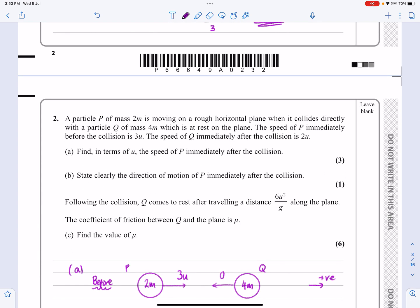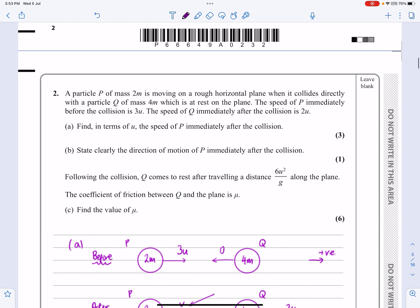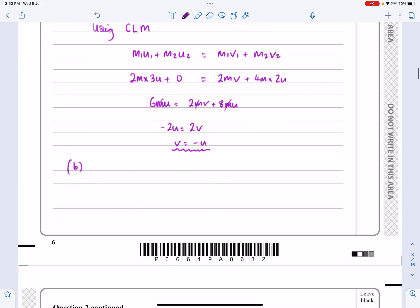Where they say find in terms of u, that's what I've done. State clearly the direction of motion, so I can now say P is moving in the reverse direction. I'm not going to say left or right, because I've decided which way in my question there. But if I say it's moving in the opposite direction, it's moving in a direction that has been reversed, then that's nice and clear for the examiner, and I'll get my marks for that.